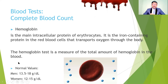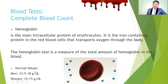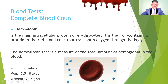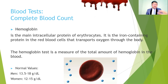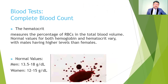Normal hemoglobin in men is approximately 13.5 to 18 grams per deciliter, while in women it is 12 to 15 grams per deciliter. If the value is increased, the condition is called polycythemia. If the RBC count is decreased, the condition is called anemia. There are many different types of anemia; here we are discussing what blood tests are available to check the complete blood picture.